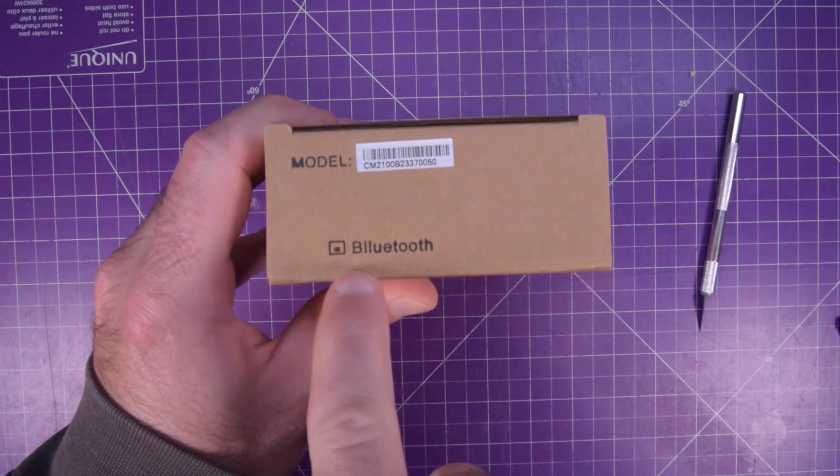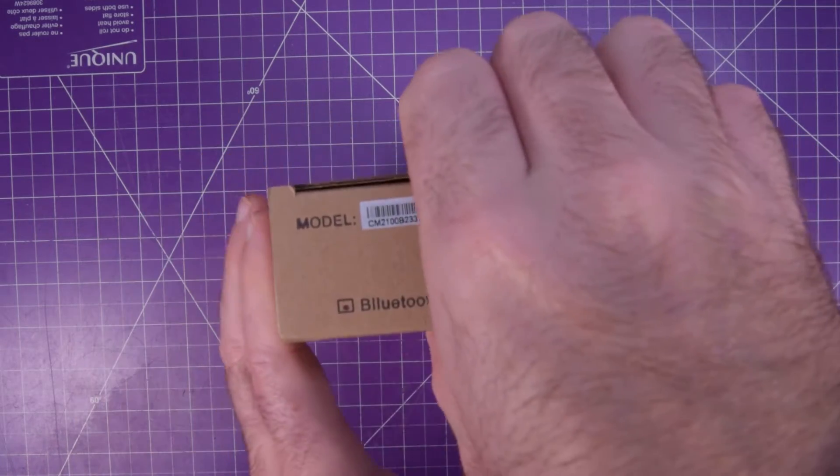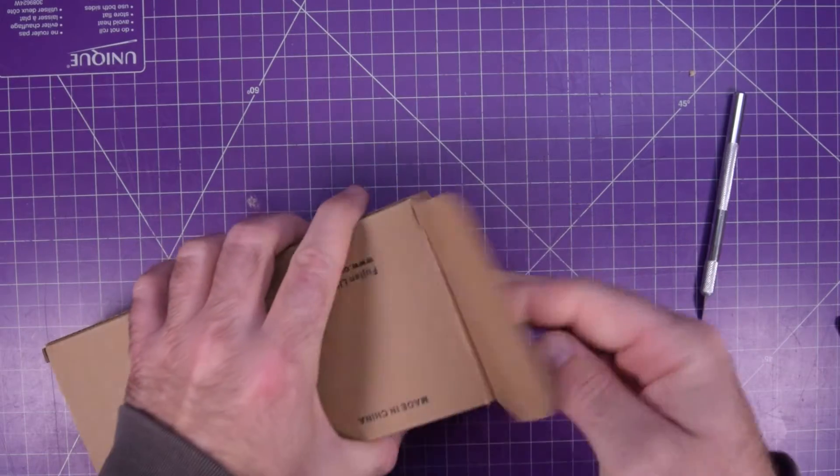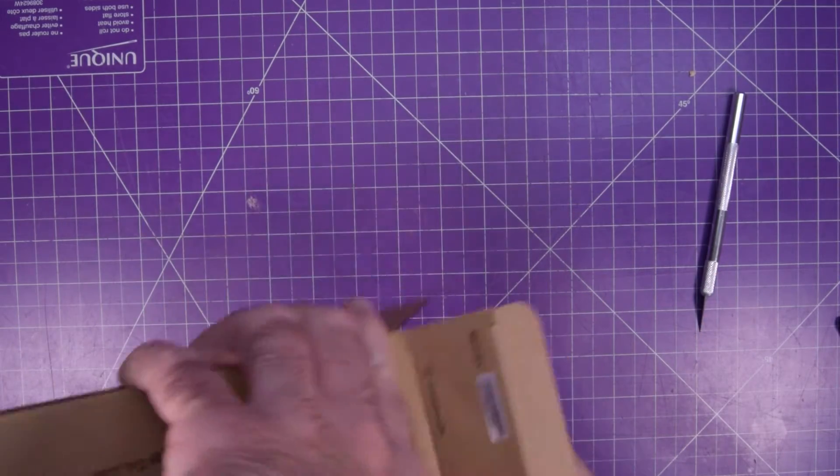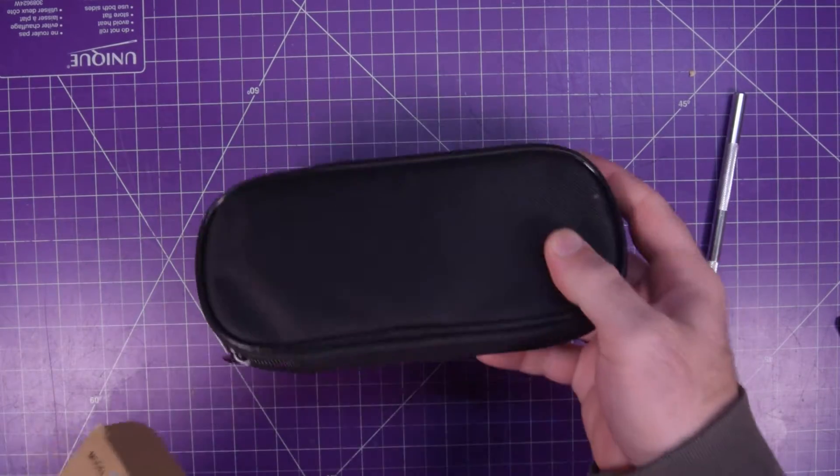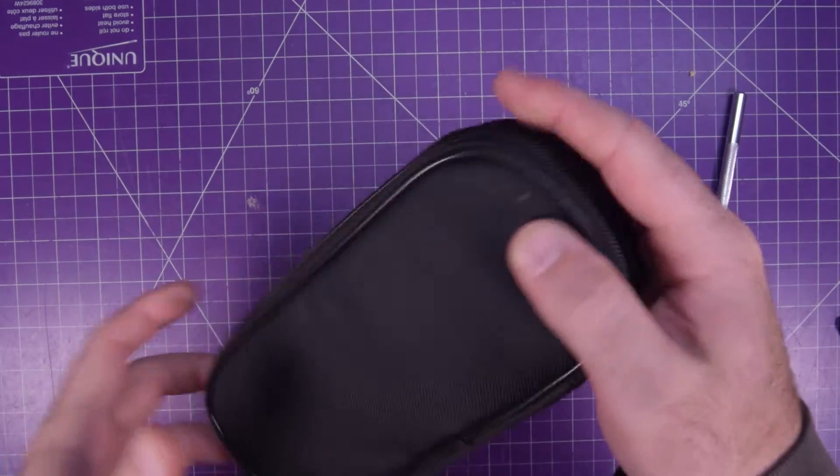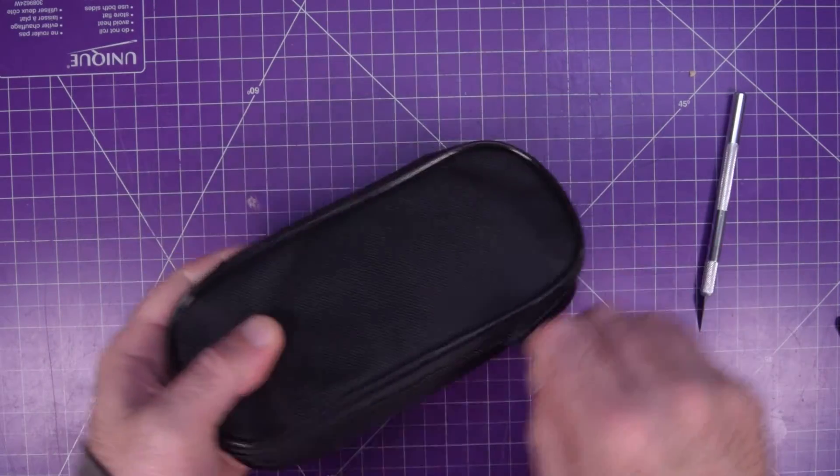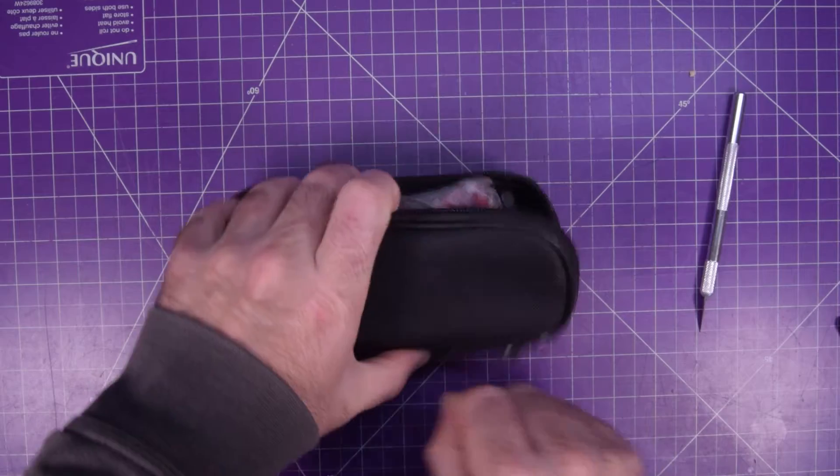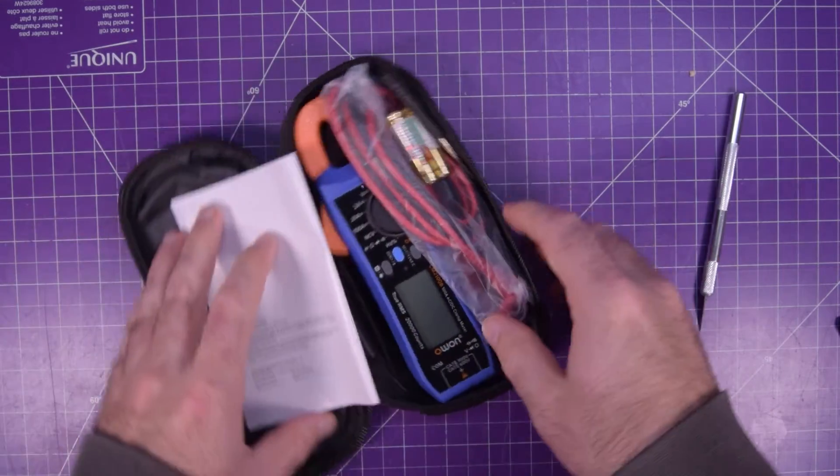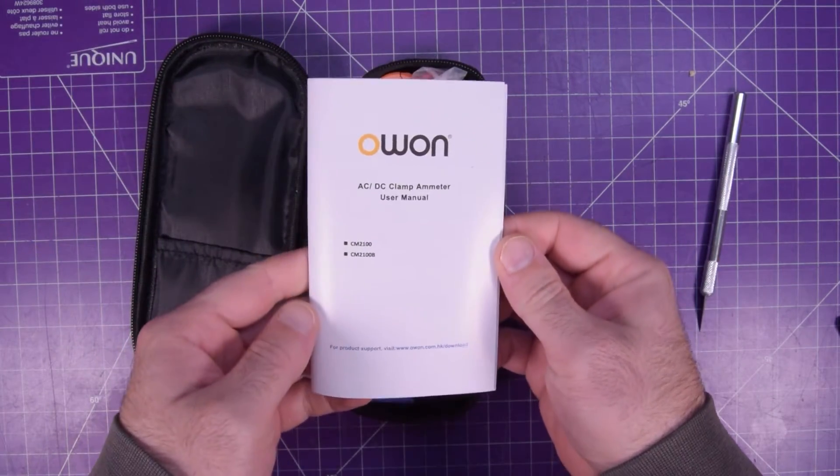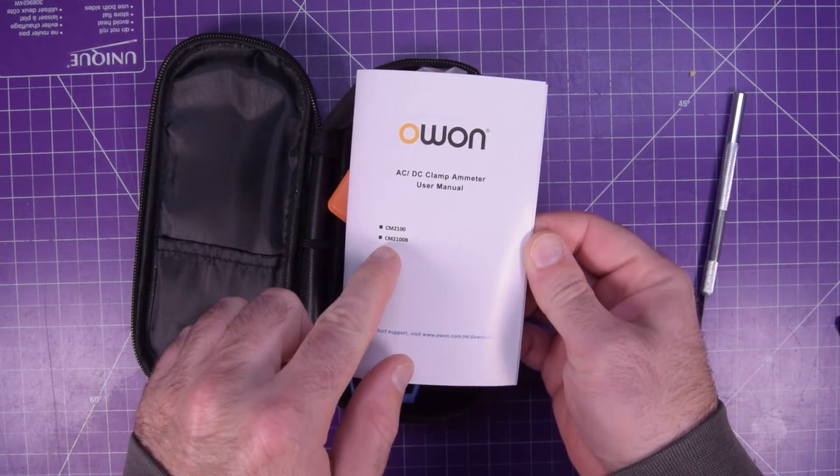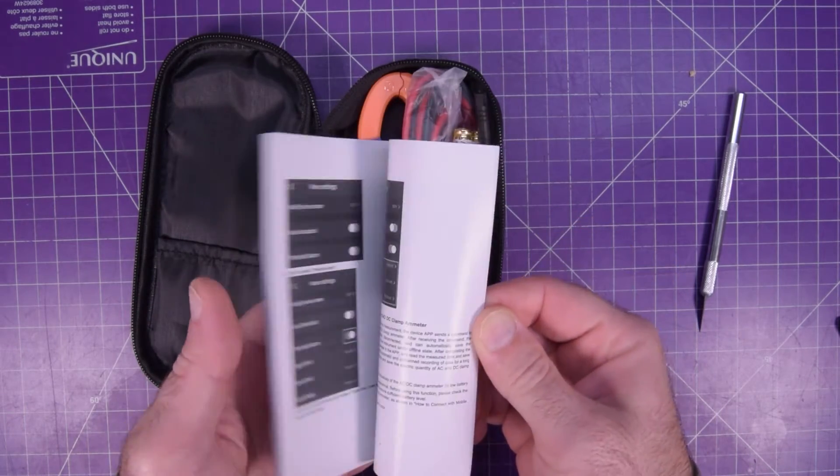CM2100B233, and then Bluetooth, I don't think there's two L's in Bluetooth, but that's okay. We got a soft pouch, ooh la la, look at that. So this is the CM2100B with Bluetooth.